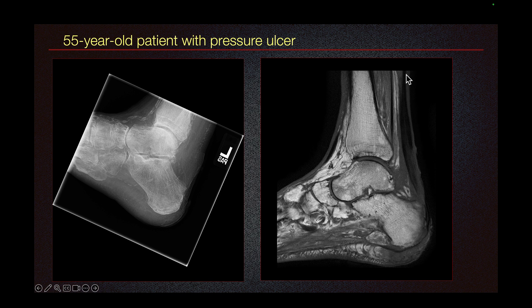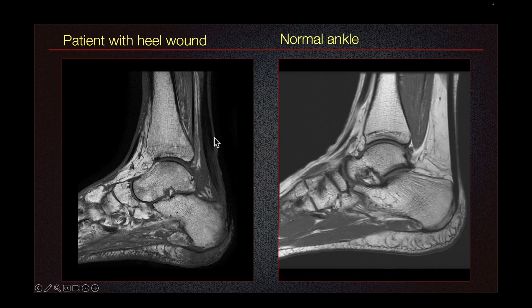This patient has an additional finding in the Achilles tendon. The Achilles tendon should appear nice and dark like this, but as we go below, it has increased signal. So this person also had tendonitis of the Achilles tendon as a result of the ulcer. Here we can compare the T1 hypointense marrow signal with normal T1 signal, and also compare our abnormal Achilles tendon with a normal Achilles tendon.